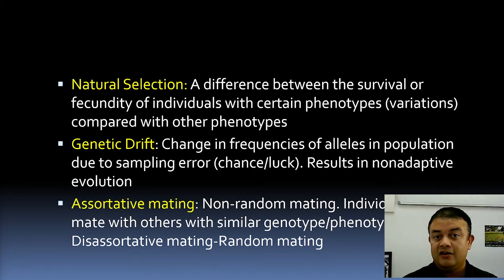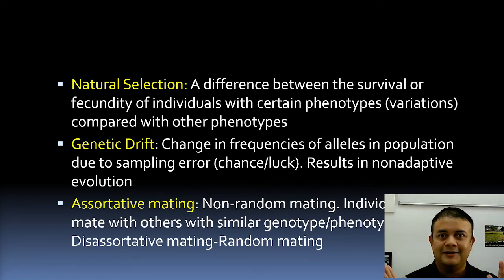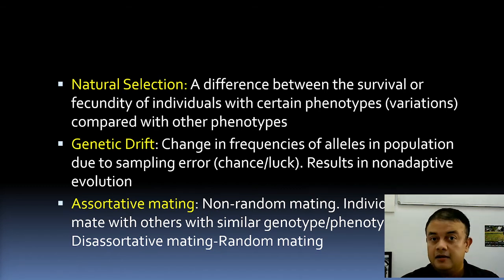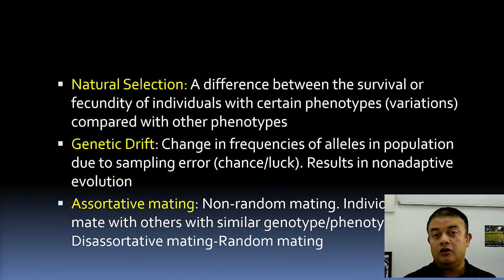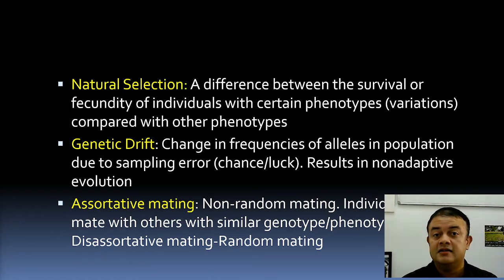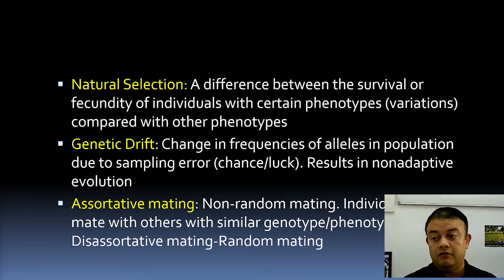Drift is a purely mathematical phenomenon. One example is an asteroid impact or a nuclear war — if the world becomes uninhabitable and only a few individuals survive inside a lead-lined lab, the next generation of human beings depends entirely on who happened to be in that room. There is a population bottleneck — a completely chance event. This is completely non-adaptive evolution.